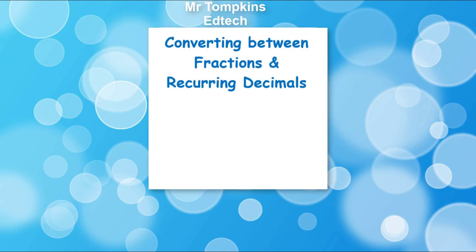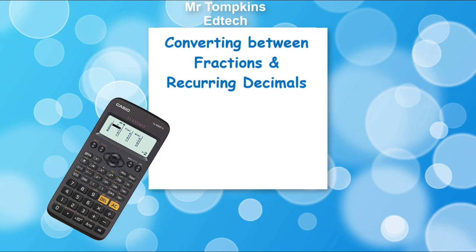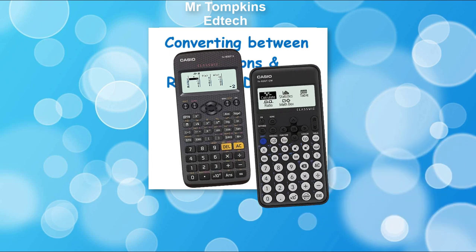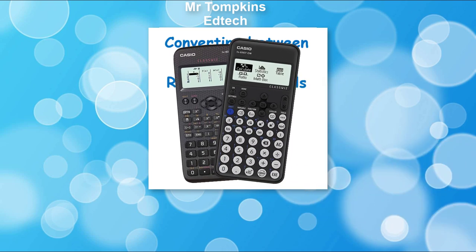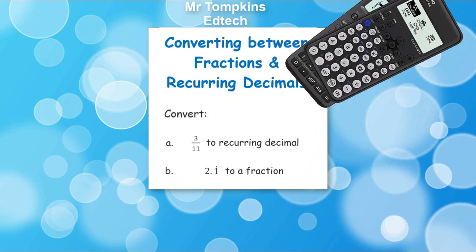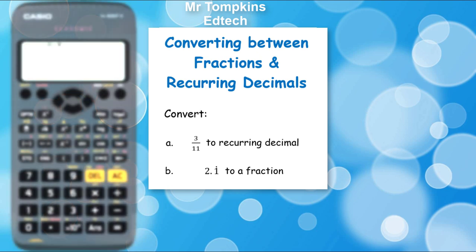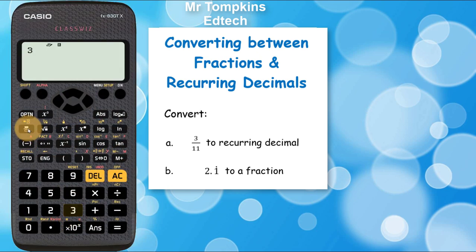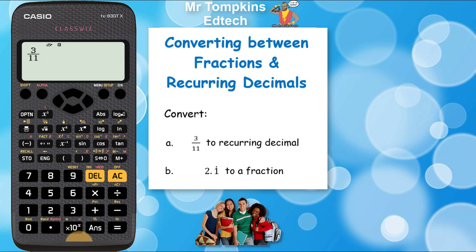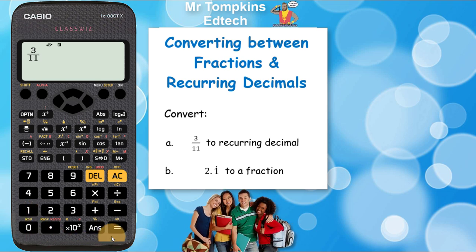Convert between fractions and recurring decimals on the old and new style Casio calculators. Convert 3 elevenths to a recurring decimal. On the old calculator, use the fraction key to type in the fraction — press the numerator, then the fraction key, then 11 to get 3 elevenths.